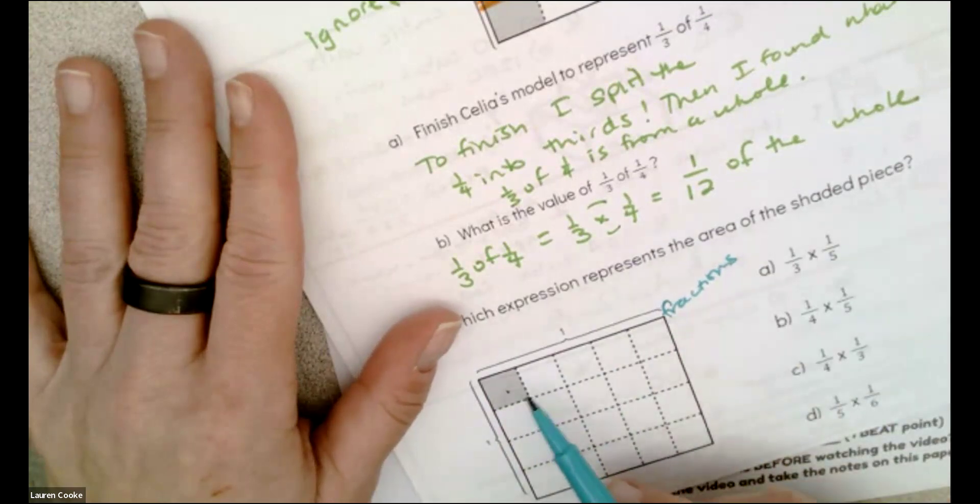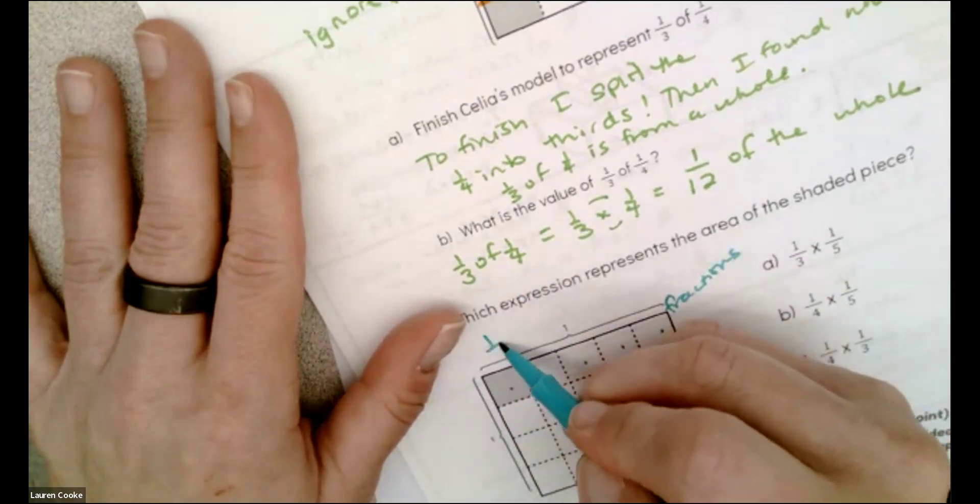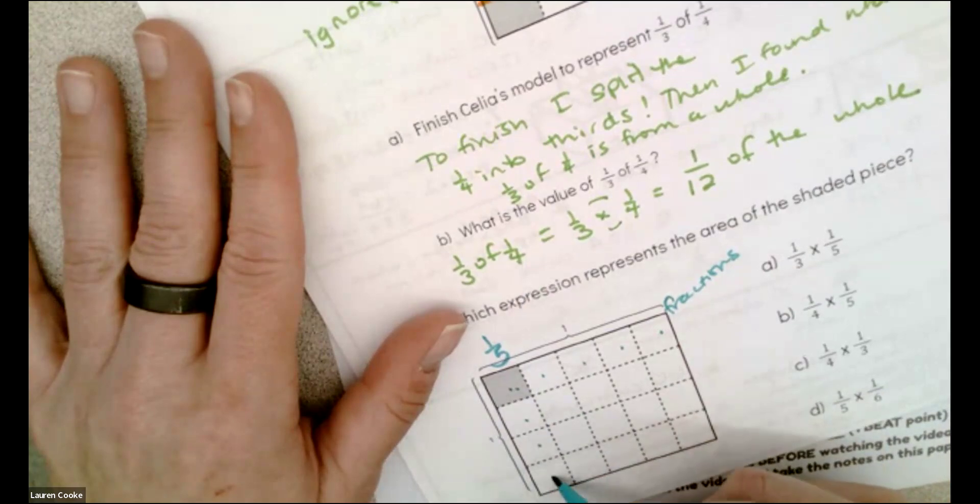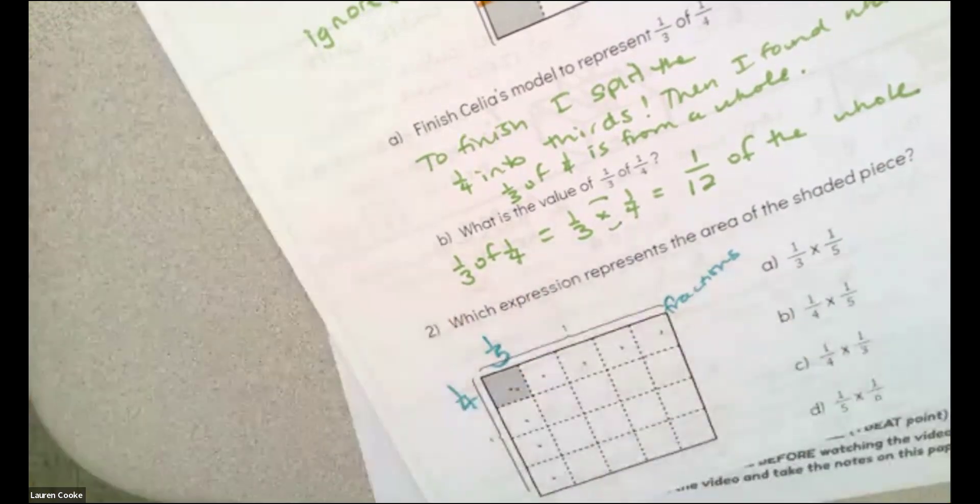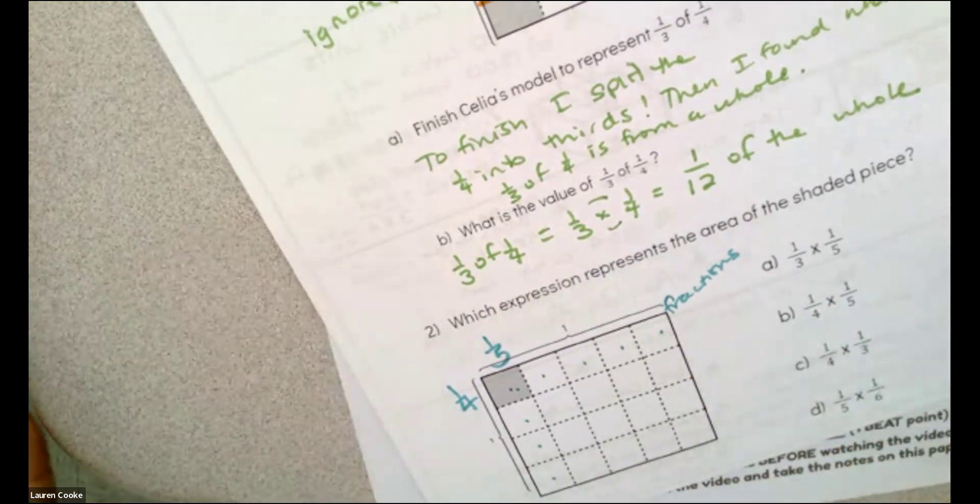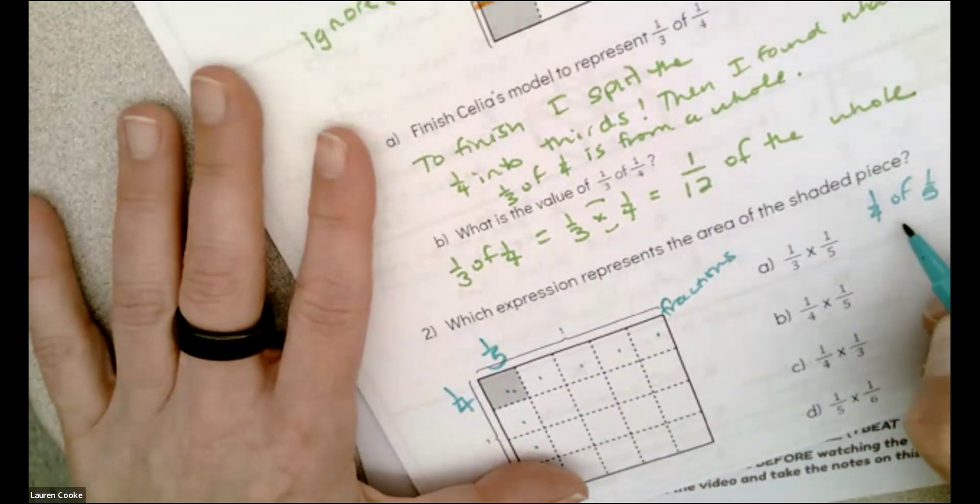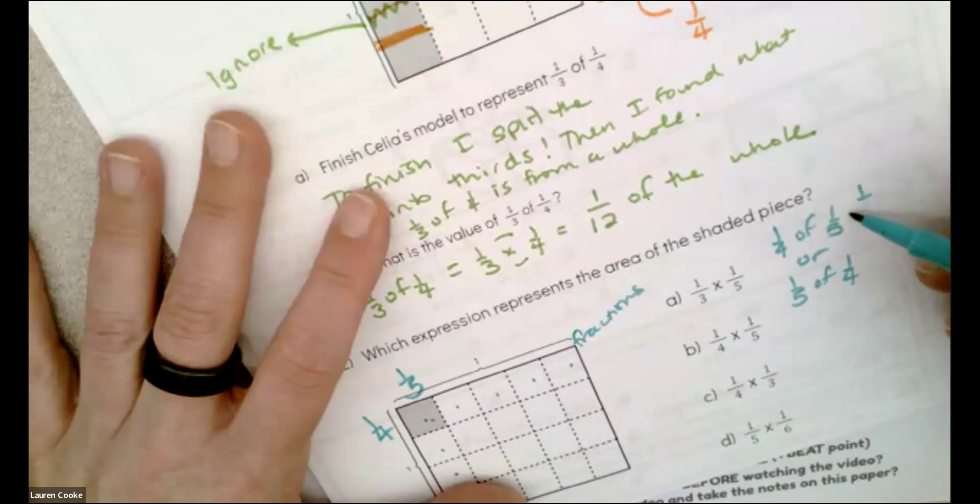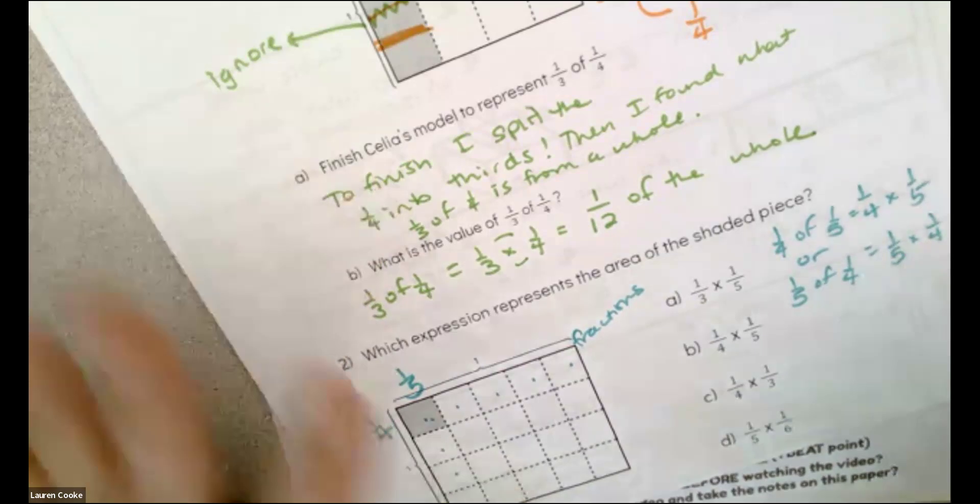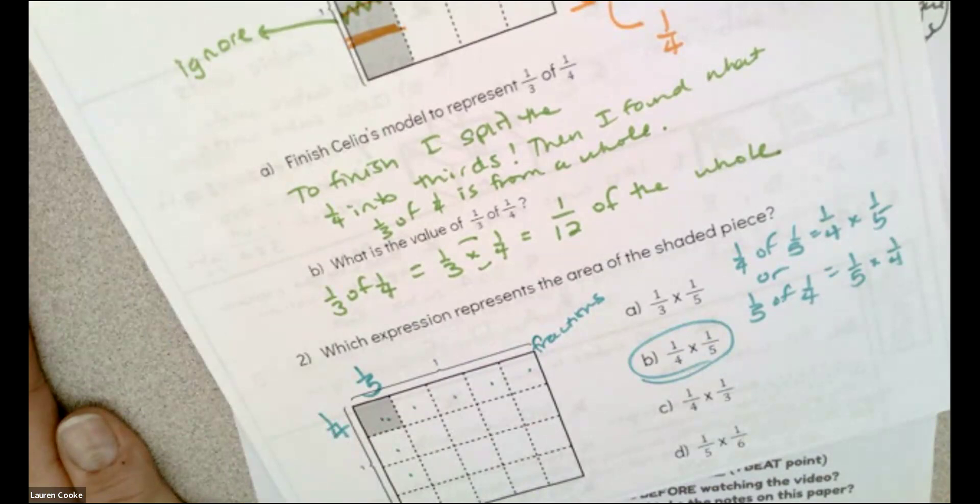So I have one, two, three, four, five, so this is one-fifth. And then I have one, two, three, four, this is one-fourth. So it looks like I have one-fourth of one-fifth or one-fifth of one-fourth. One-fourth of one-fifth or one-fifth of one-fourth, and those are both one-fourth times one-fifth, one-fifth times one-fourth. Those are the same things.